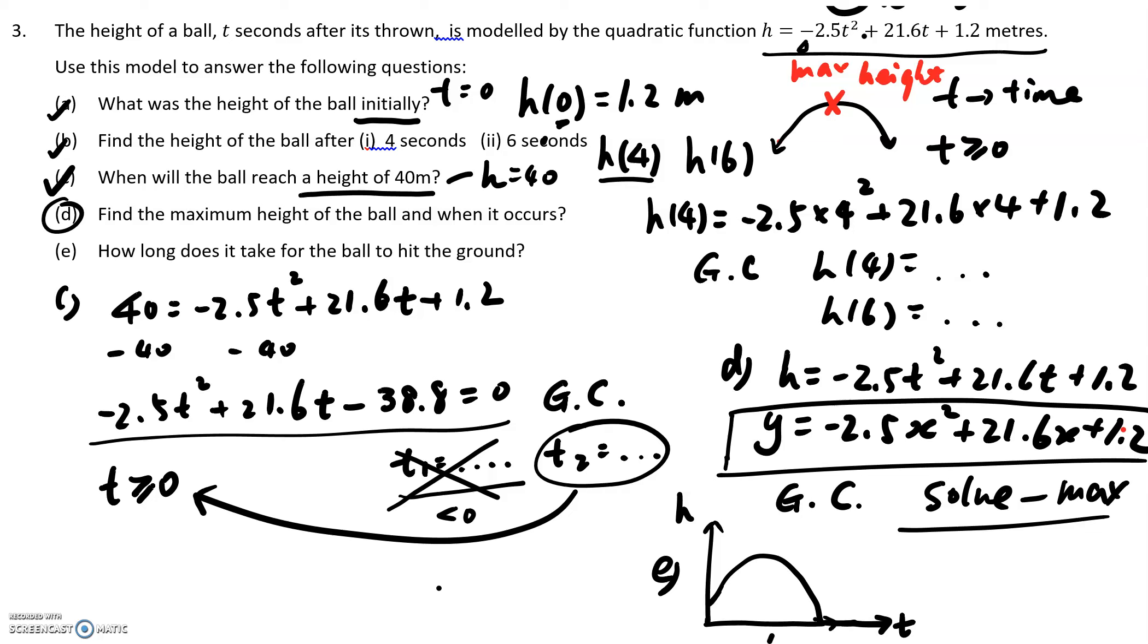We know that here is 1.2, 1.2 meters. So we want to calculate how long does it take for the ball to hit ground. Basically, what we need to do is we need to get this x-intercept. And this is how long.